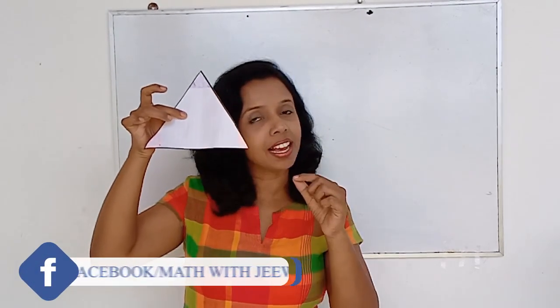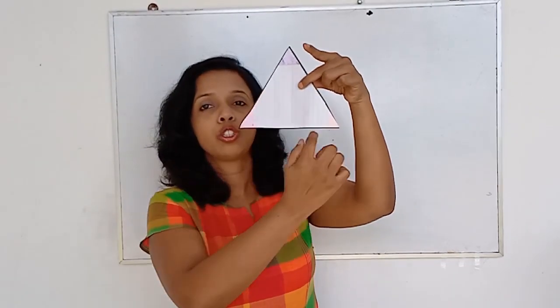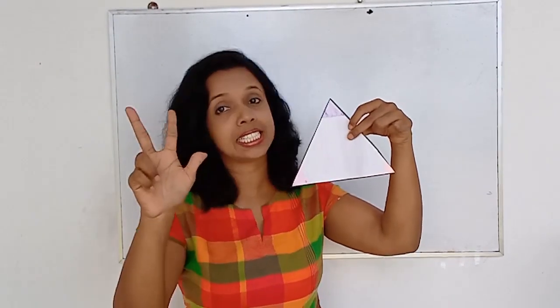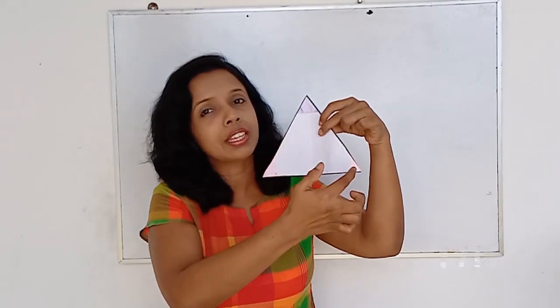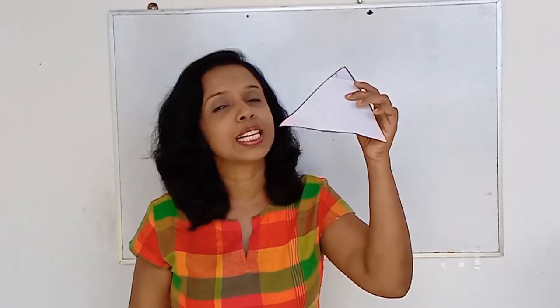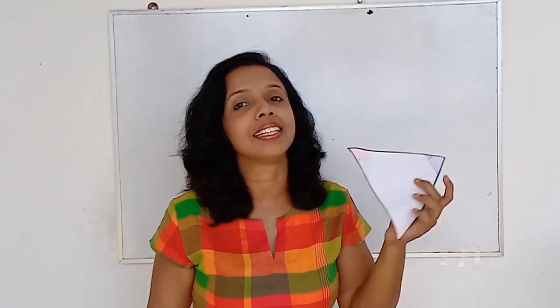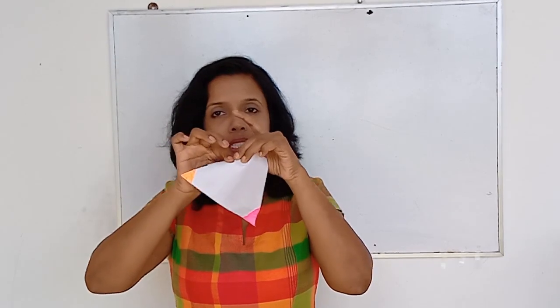Look at this — it's a triangle. What are the features you can see? One, two, three — three sides. And one, two, three — you can have three angles. That is what it is called: a triangle. Now look at this — I have colored the angles. Those are equal, the internal angles.